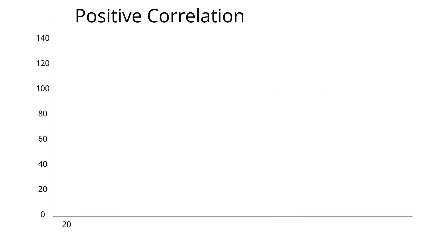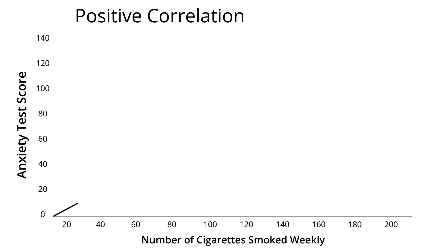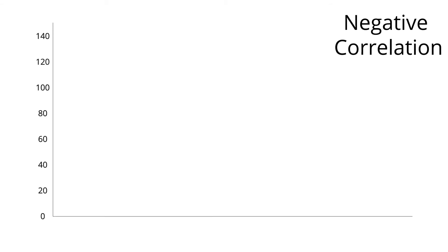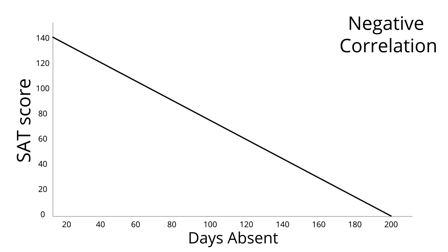Correlation also measures the direction of the relationship between variables. If the direction is positive, that means both variables grow or shrink together. For example, the number of cigarettes a person smokes weekly positively correlates with their overall score on an anxiety test — a low anxiety score is associated with low cigarette use, while a high anxiety score is associated with high cigarette use. Two variables can also negatively correlate, like the number of absences a student has and their SAT score. As one variable grows, the other shrinks — a high number of absences likely means a low SAT score, and a low number of absences means a higher SAT score.